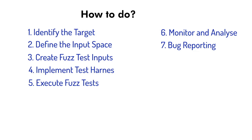Bug reporting: when a crash or abnormal behavior is detected, save the generated input that caused it. This information is vital for debugging and fixing the identified issues. Maintain a test corpus — keep a corpus of interesting test cases and inputs that can be used to seed the fuzzer for future testing. This corpus helps in expanding the coverage and effectiveness of the fuzz testing process.